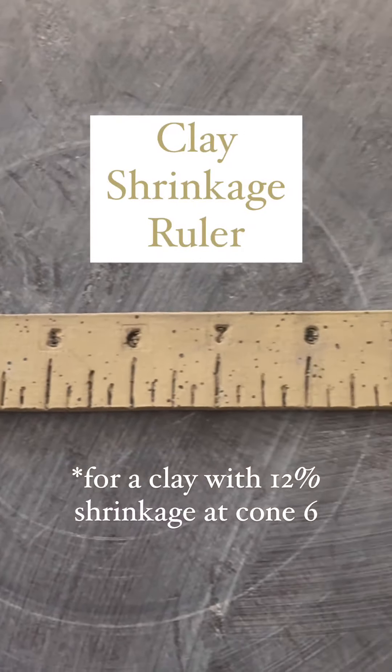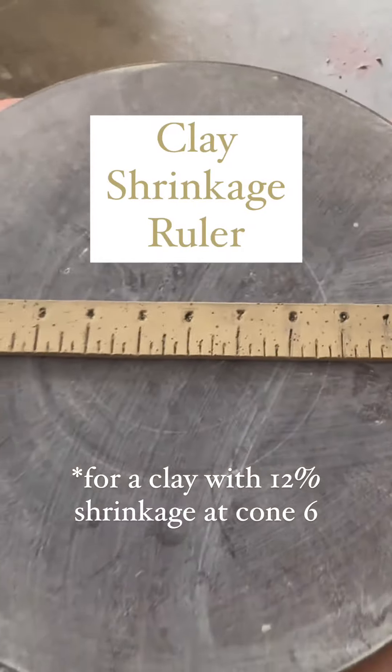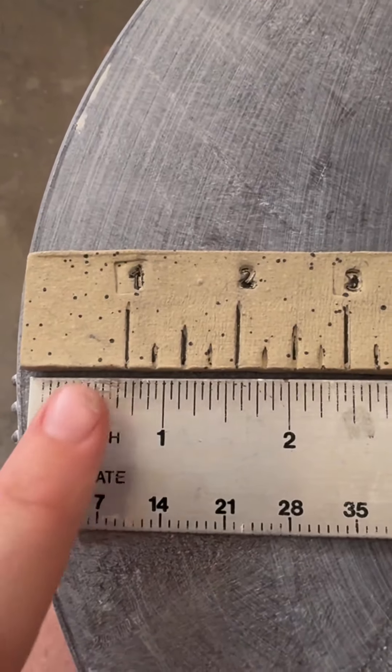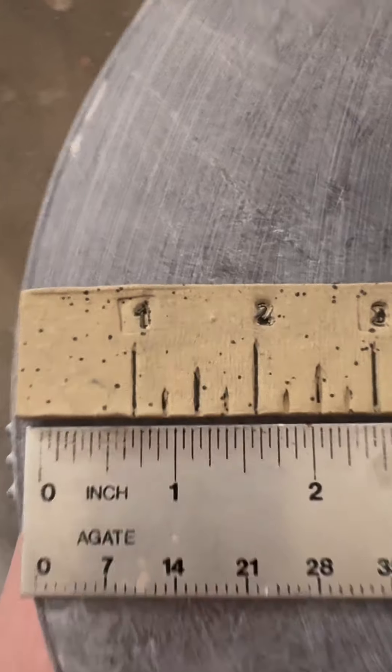In this video, we are going to look at my clay shrinkage ruler. This specific ruler shows what shrinkage of 12% looks like.